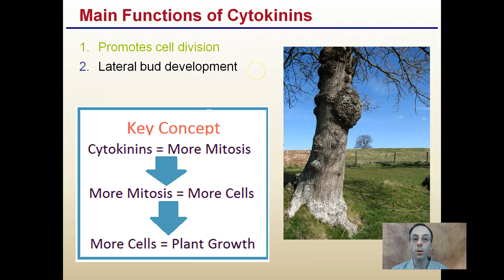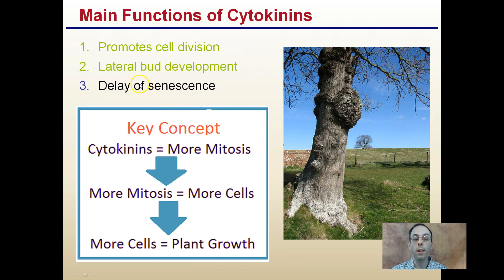The last main function of cytokinins is delaying senescence. Senescence is when leaves basically age and drop off the plant. Cytokinins can delay that process, keeping leaves more useful and on the plant longer.